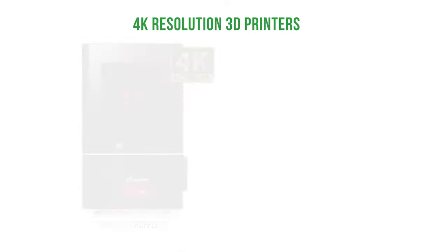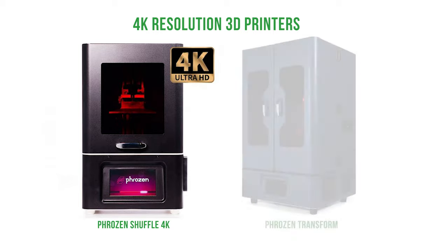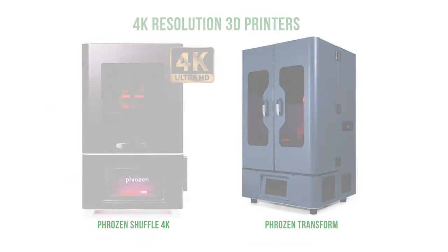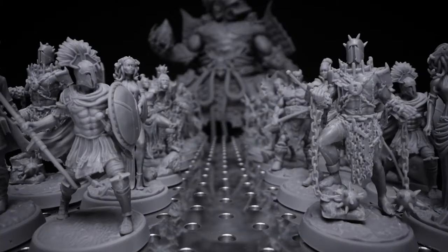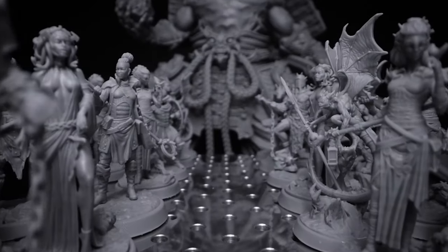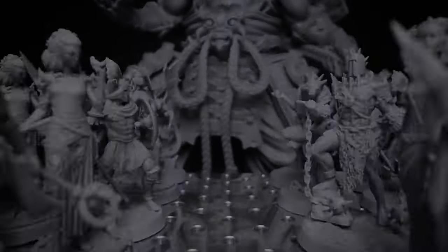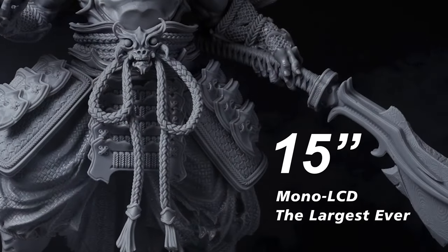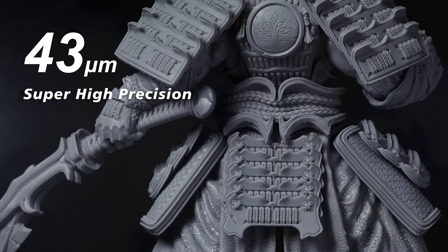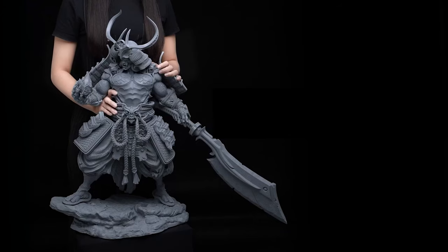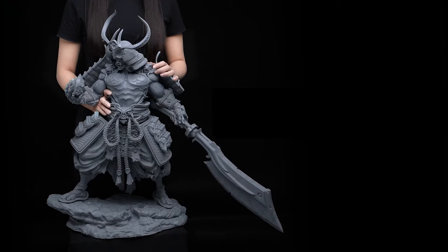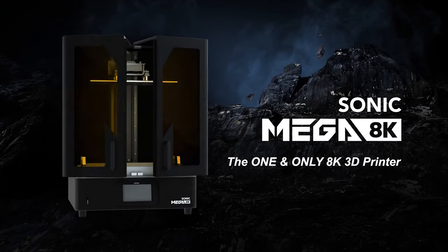For 4K resolution, we have Phrozen Shuffle 4K and Phrozen Transform. The introduction of 8K matrices, as well as the use of special monochrome matrices that increase printing speed, have made the technology dominant in the 3D printing market. A good example of an LCD 3D printer with 8K matrix is the Phrozen Sonic Mega 8K.